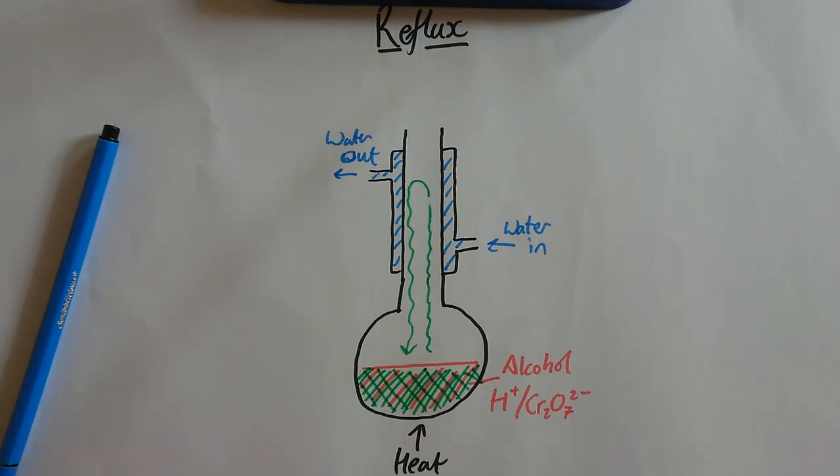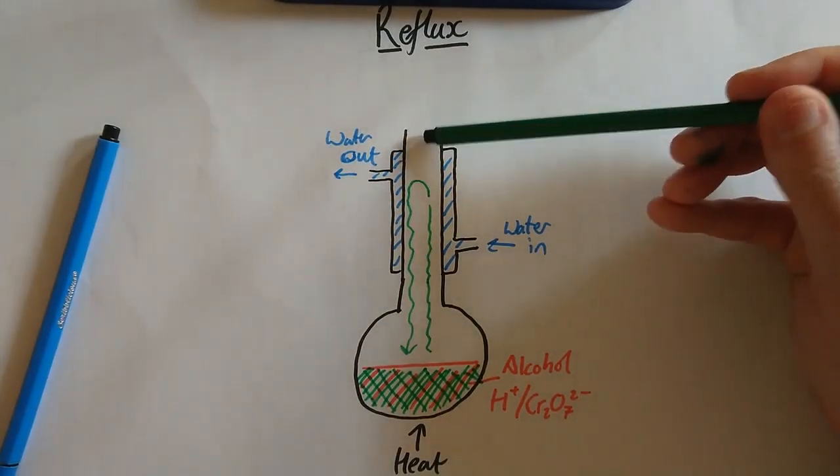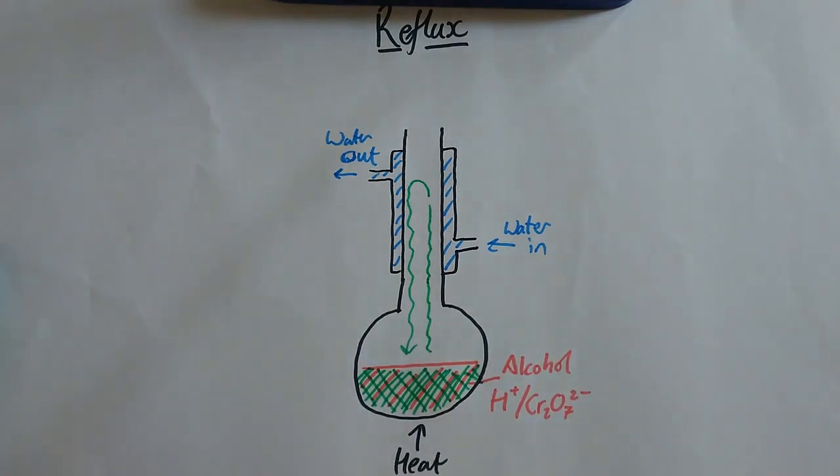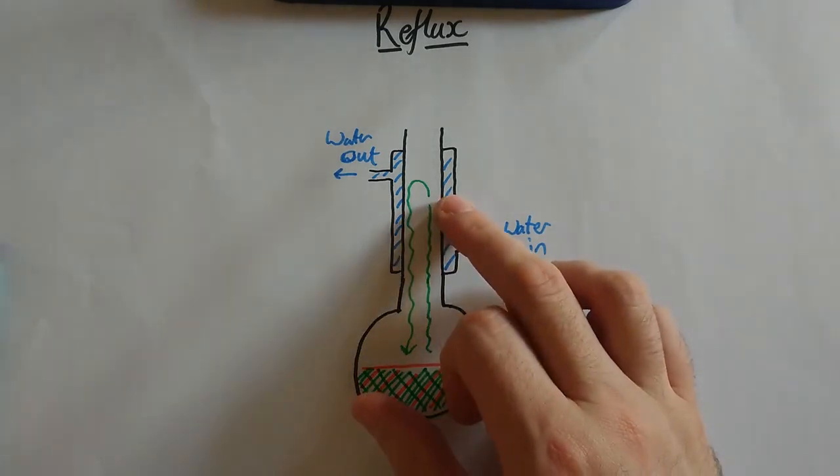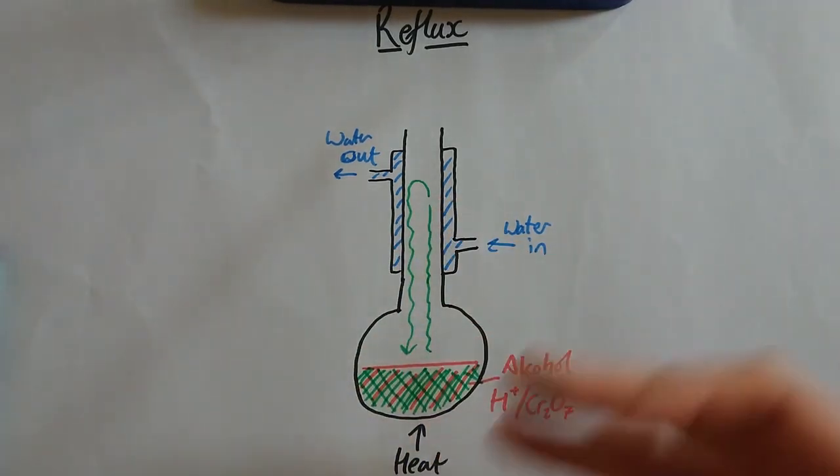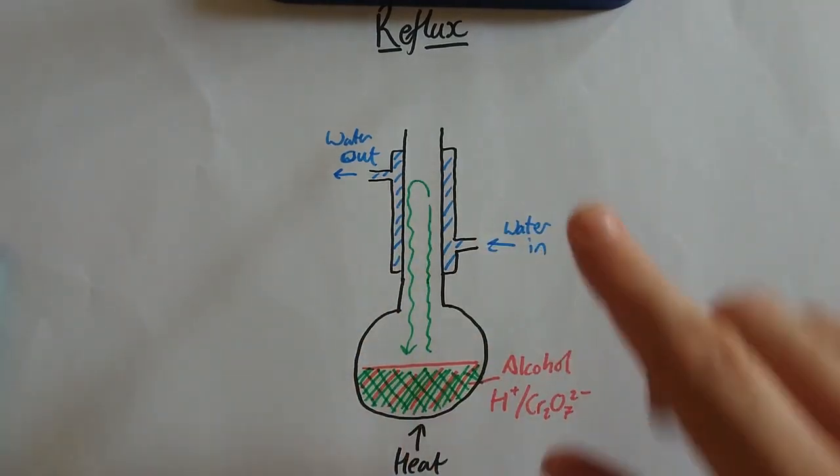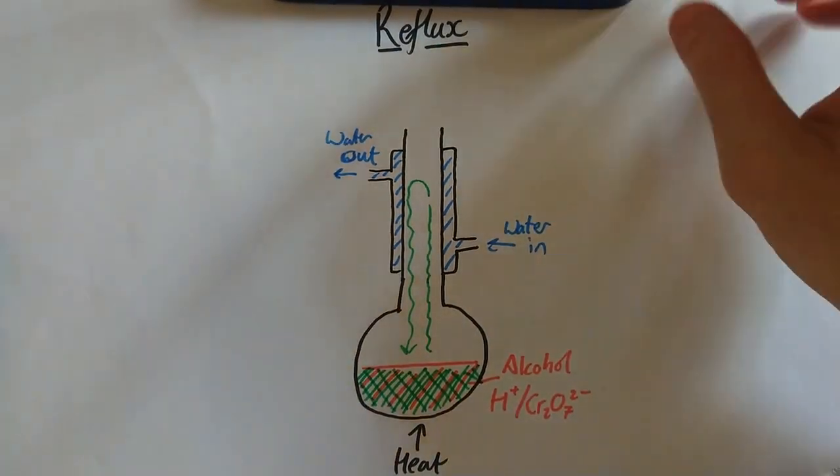Now, one of the other big differences between this and distillation is with distillation, we had a thermometer at the top because we cared about what temperature it was. Because we had to have a temperature higher than the boiling point of aldehyde, lower than the boiling point of the carboxylic acid and the alcohol. This time, we don't care how hot it gets. Anything that evaporates off, be it the alcohol, the acid, or the aldehyde, will condense back down into here. So we don't care about the temperature.